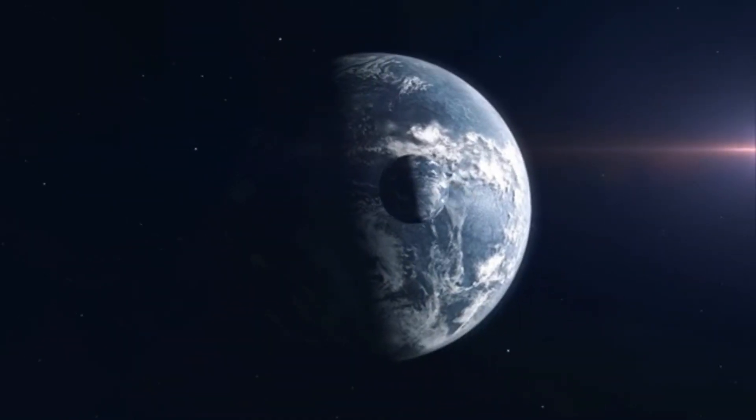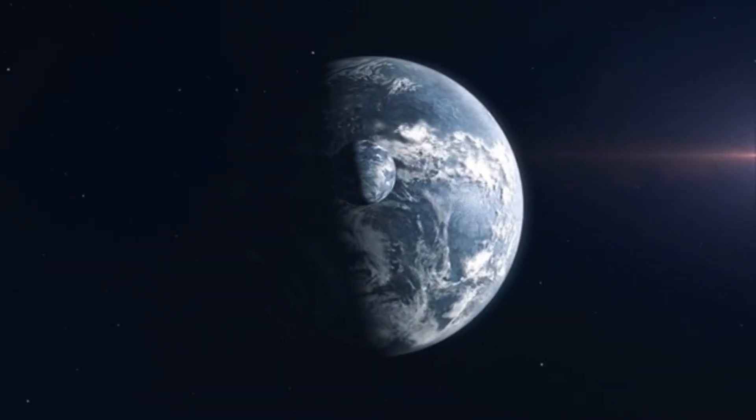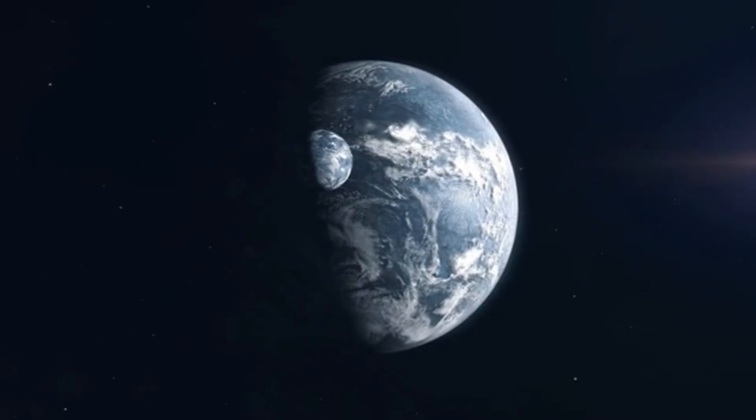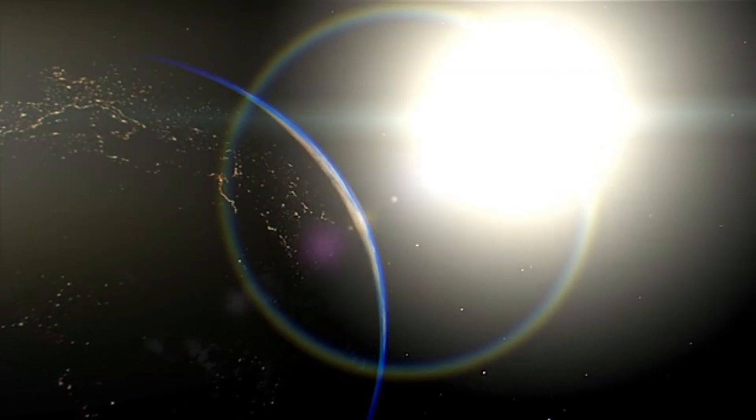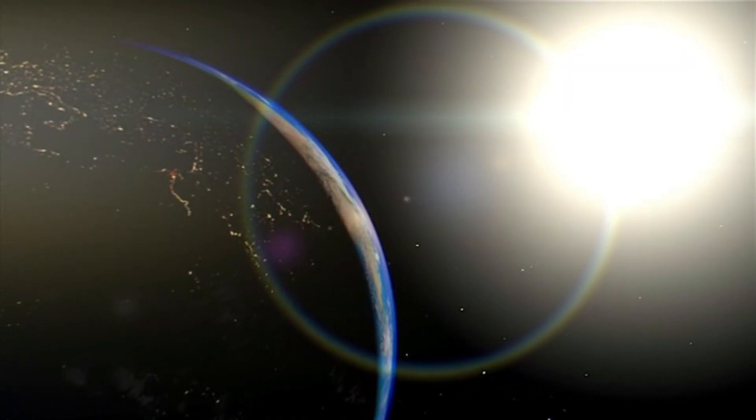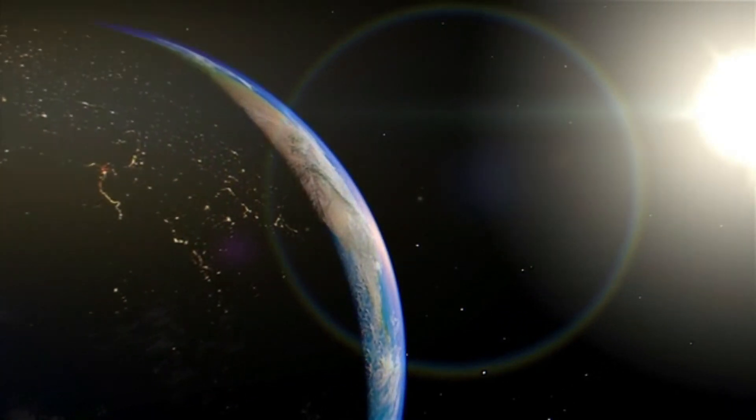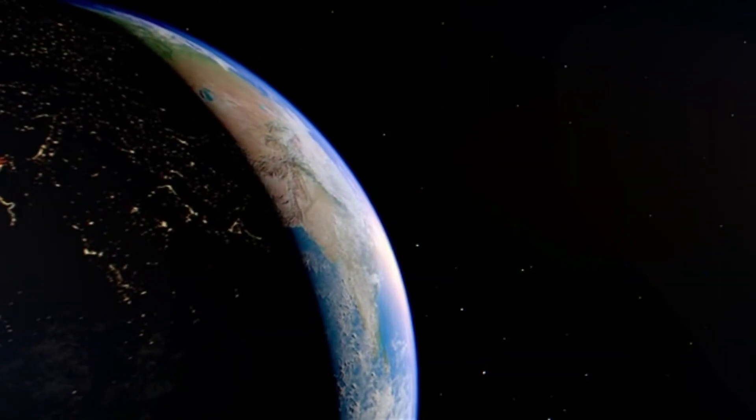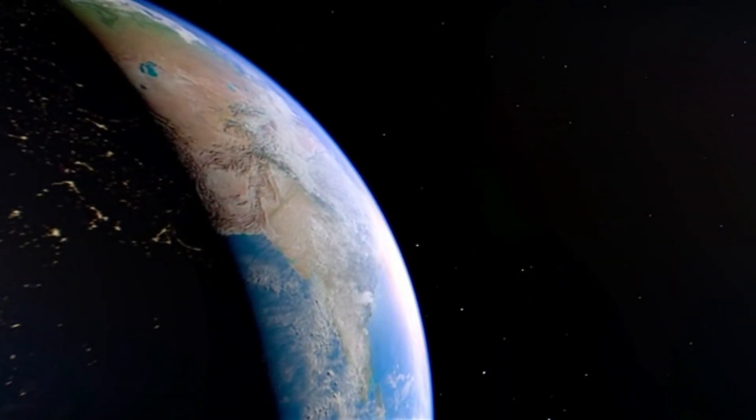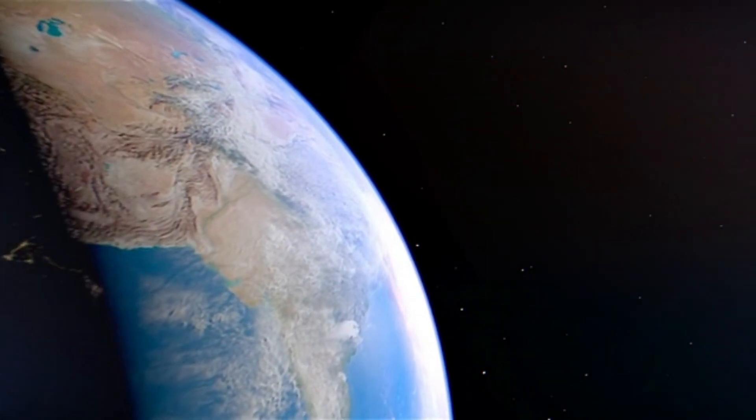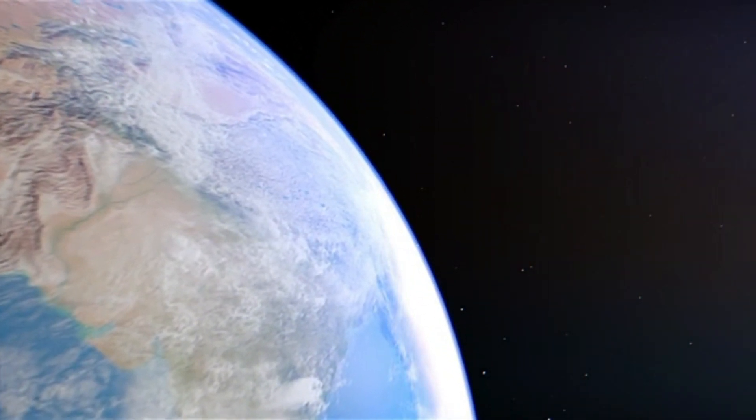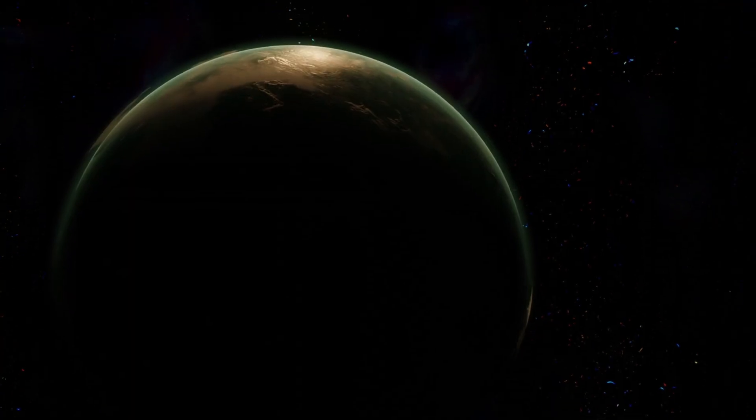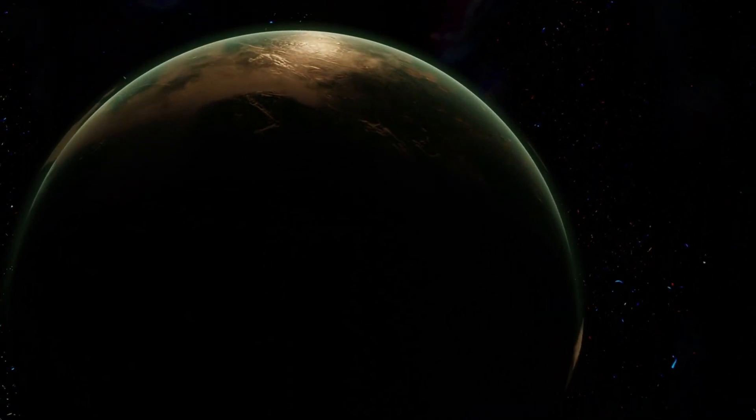These exoplanets also benefit from potentially more stable environmental conditions compared to Earth. For example, some of them receive more consistent sunlight, which could lead to stable weather patterns and a more predictable climate. This stability contrasts with Earth's variable exposure to sunlight, influenced by its axial tilt and elliptical orbit, and could result in more favorable conditions for life.